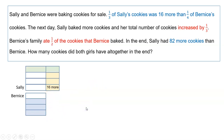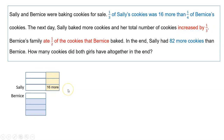It did mention that Sally baked some more cookies and her total number increased by one third. Sally has three thirds now, and so to add one third would be to add one more layer of a unit and 16 more.